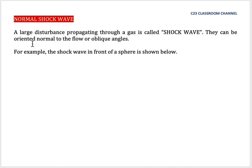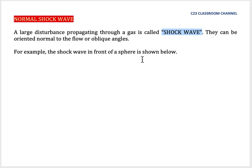What is a normal shock wave? A large disturbance propagating through a gas is called a shock wave. They can be oriented normal to the flow or at oblique angles. For example, the shock wave in front of a sphere is shown below.